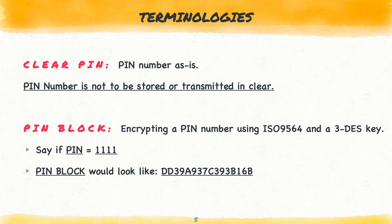Next is PIN block. A PIN block is an encrypted PIN number. This PIN block is the value that will be used for transmission purposes. The PIN is first formatted using the ISO 9564 protocol and then encrypted using a Triple DES key. A PIN number of 4 to 6 digits is converted into a PIN block — for example, a PIN of 1111 based on a certain key looks like a PIN block with hexadecimal digits.